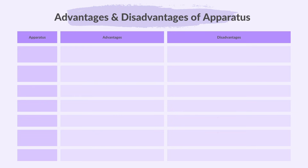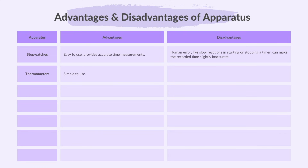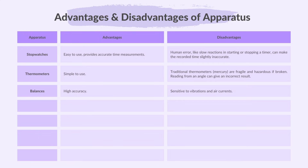Now let's discuss the advantages and disadvantages of apparatus used in labs. Stopwatches are easy to use and provide accurate time measurements, but the disadvantage is human error — slow reactions in starting or stopping a timer can make the recorded time slightly inaccurate. Thermometers are simple to use; however, traditional thermometers are fragile and hazardous if broken, and reading from an angle can give an incorrect result. Balances have high accuracy; however, they are sensitive to vibrations and air currents.